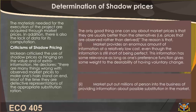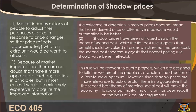This information has some relevance as long as preference functions give some weight to the desirability of voluntary change. Markets put millions of persons into the business of providing information about possible substitution, and induce millions of people to adjust their purchases or sales in response to price changes so that price reflects approximately what an extra unit would be worth to all users. Because of market imperfections, shadow prices may be more appropriate exchange ratios in principle, but in most cases it will be extremely expensive to acquire the improved information.